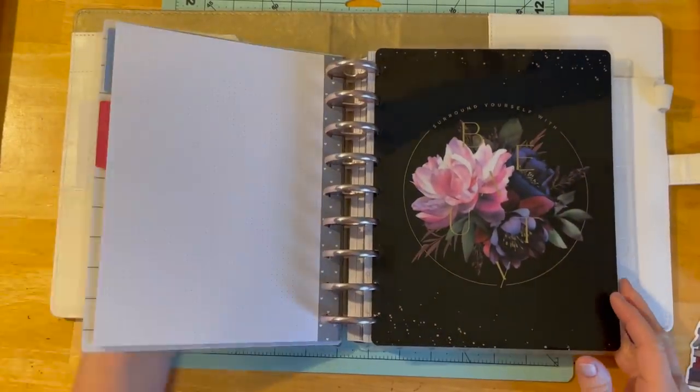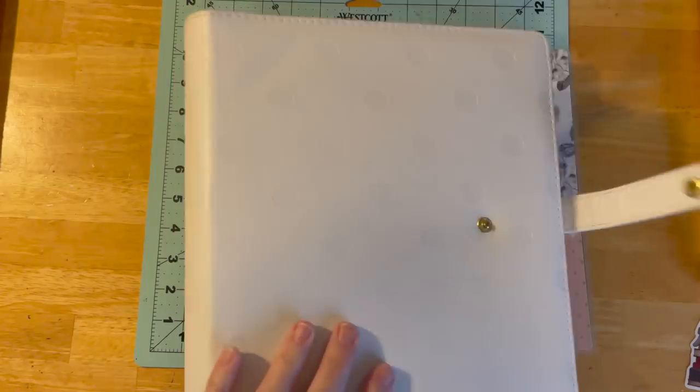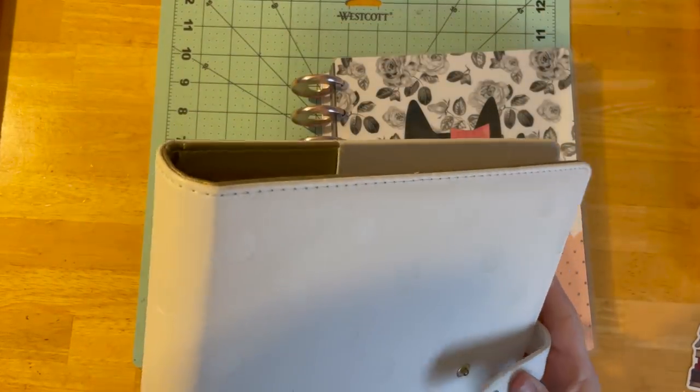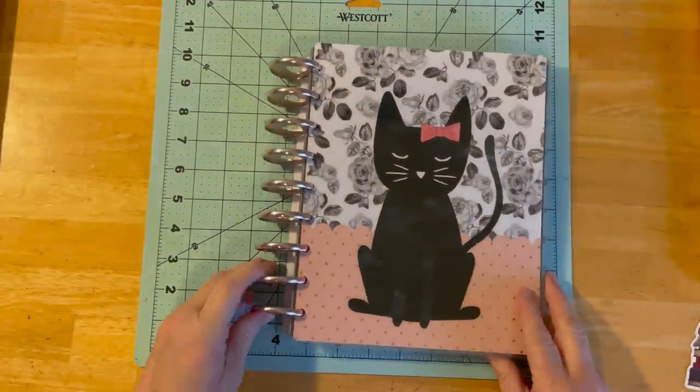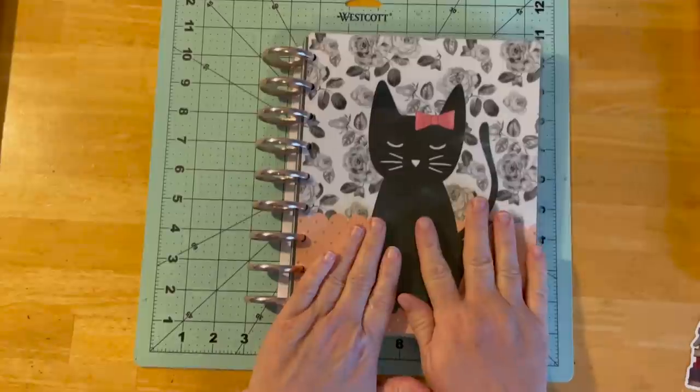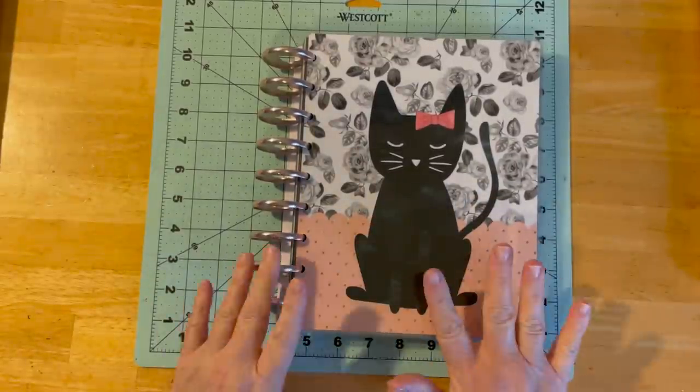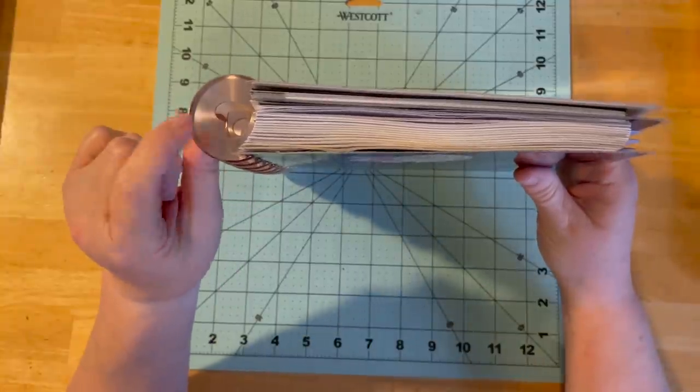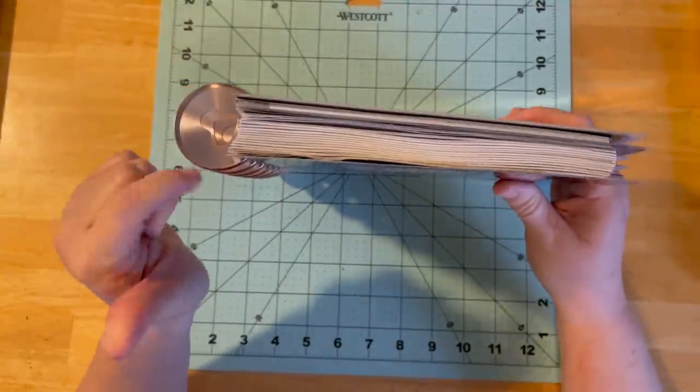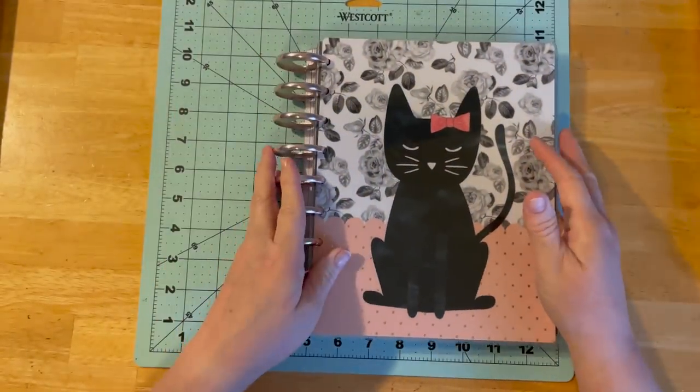So we're going to start at the beginning. First of all, I tend to keep my planner in a planner cover, especially if I'm going to be leaving the house or taking it with me, but I won't be today. I have the Happy Planner. That's the brand of planners that I buy. It's me and my big idea, Happy Planners. It is a disc bound system. So these are your discs. This happens to be an expansion disc, so it's quite large. So it holds a fair amount of pages.